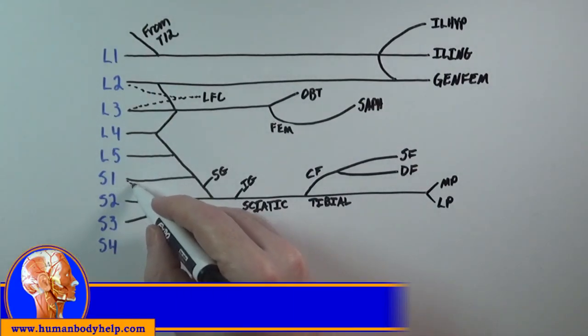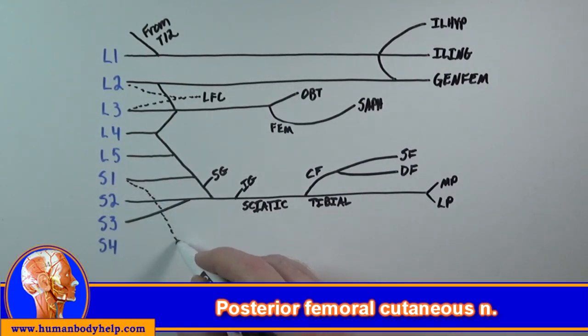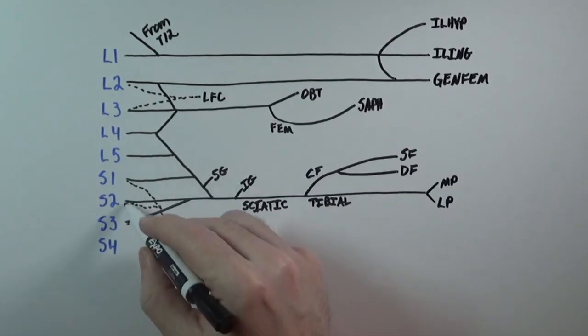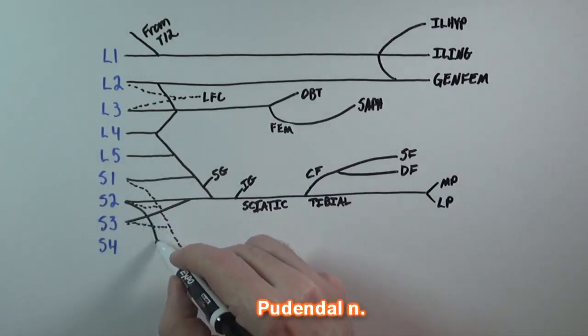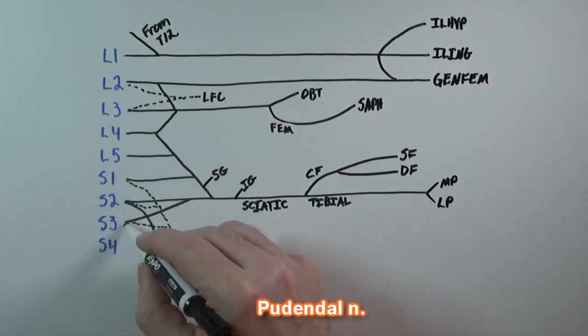Next, posterior to the plexus, hence the dotted line, we have a nerve with contributions from S1 through S3. This nerve is called the posterior femoral cutaneous nerve. And finally, we have the pudendal nerve, which receives contributions from S2, 3, and 4.